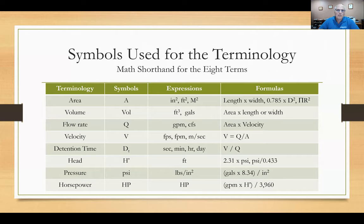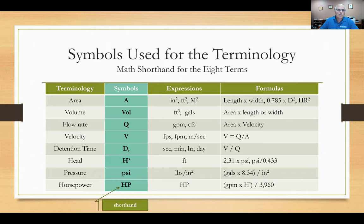The symbols for these eight terms: area (A), volume (VOL), flow rate (Q), velocity (V), detention time, head, pressure, and horsepower. Notice that a couple of words start with V, so one is called VOL and the other V to keep them separated. The third column shows how they're expressed — for example, area can be cubic inches, cubic feet, or cubic meters — along with common formulas like area times width, or 0.785 times diameter squared.